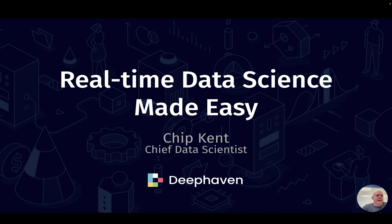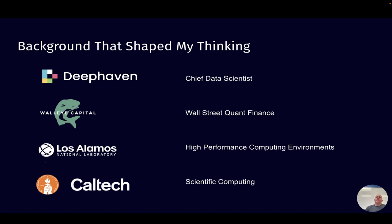Thank you for joining me today. I'm Chip Kent, the Chief Data Scientist at Deep Haven Data Labs, and we're going to talk about real-time data science made easy. I'll give you a little background on my history and things that shaped my thinking. Way back in the day, I did scientific computing work, then high performance computing environments, then spent quite a while doing quantitative finance on Wall Street, looking at trading signals from milliseconds up to a couple days — all real-time things. We took technology developed there and spun that out as Deep Haven Data Labs.